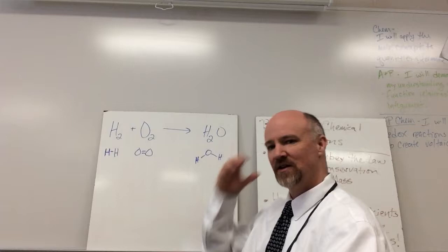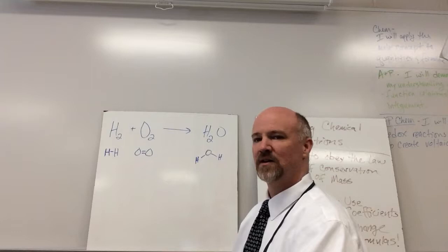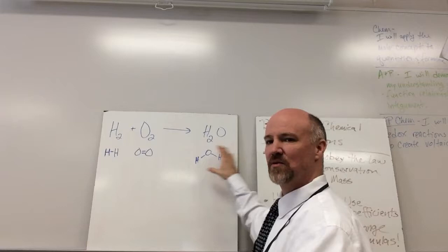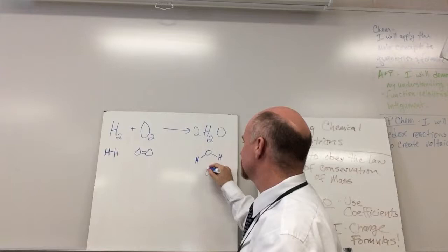So we figured out that I have one less oxygen over here, one more over here. So how can I get on this side, how many waters can I make with two oxygens? And the answer is I can make two, right?